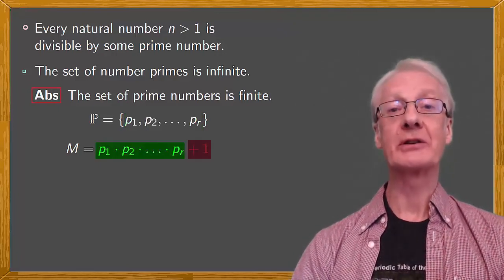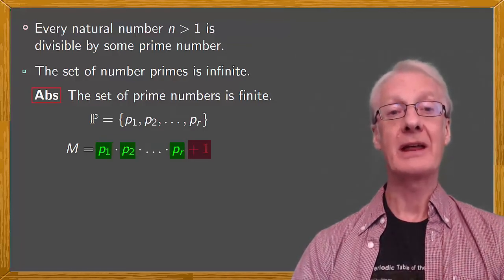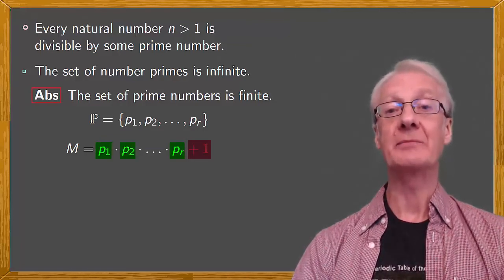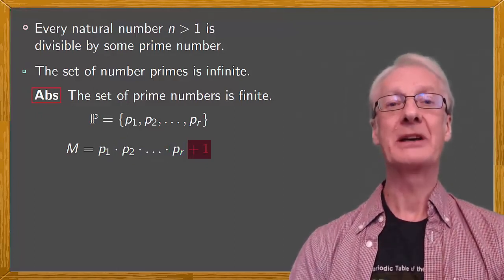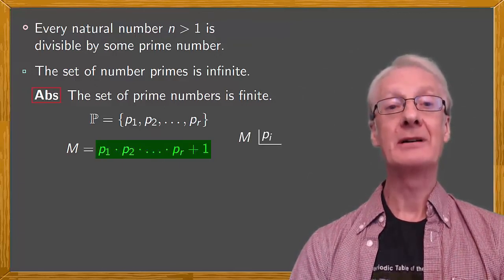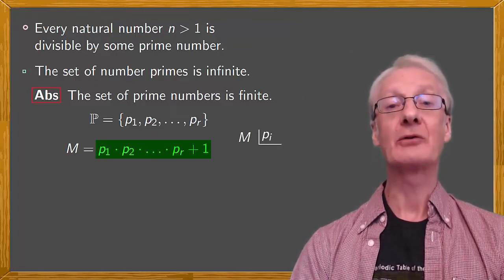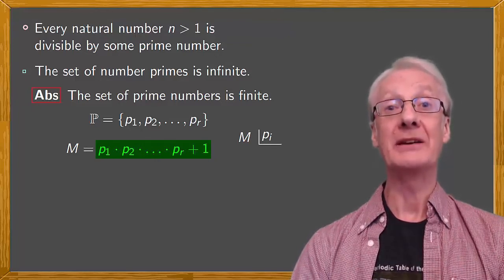If M were just the product of all the pis from P1 up to PR, then there'd be no remainder if M were divided by any of these prime numbers, because they'd all be factors. But because we added 1 to the product, when we divide M by any of the pis from i equals 1 to i equals R, there'll always be a remainder of 1.